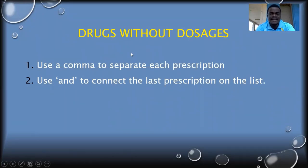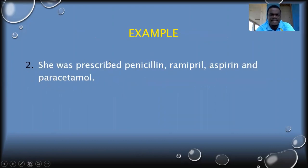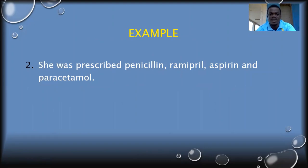Sometimes you may not want to add the dosage of the drug — you just want the reader to have an idea of the medications the patient is on. This is quite simple. Just use a comma to separate each prescription, and use the conjunction AND to connect the last prescription. For example: penicillin, ramipril, aspirin, and paracetamol. Here we didn't add the dosages.